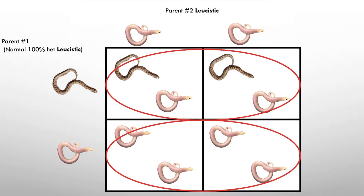In my opinion, this is my favorite combination. If I wanted to get into a recessive gene, I would get a visual recessive and pair it with an animal that carries it. That way, all your offspring carry the recessive gene — any normal-looking baby you know for a 100% fact is going to be a carrier. That really helps you when selling your animals because you know exactly what genetics you have.